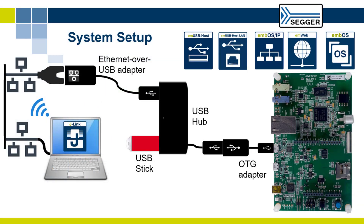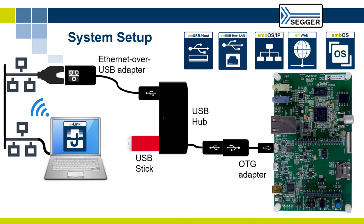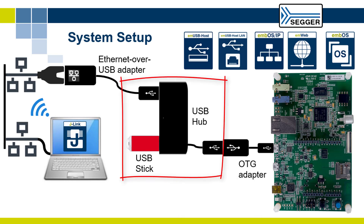Besides the network connection, the embedded system can still enumerate any number of other USB device classes. For example, using a USB hub, files can be saved onto a USB stick simultaneously.